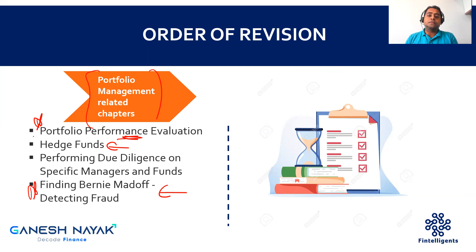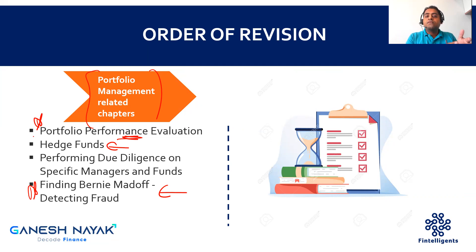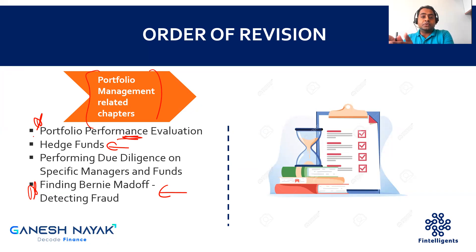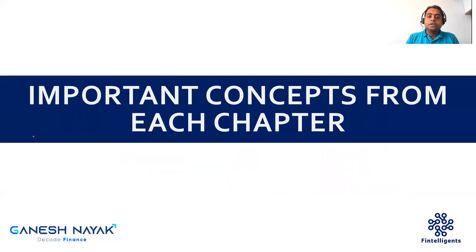We have done the basic bifurcation of chapters and the order of revision. You'll notice the order is similar to what's given in the book. There's no need to change the order of preparation because the book flows logically — starting from a single factor, taking you to an asset, then to a portfolio, then to portfolio risk, and finally to the entire fund house level.